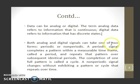Both analog and digital signals can take one of two forms: periodic or non-periodic. A periodic signal completes a pattern within a measurable time frame called a period and repeats that pattern over subsequent identical periods. The completion of one full pattern is called a cycle.